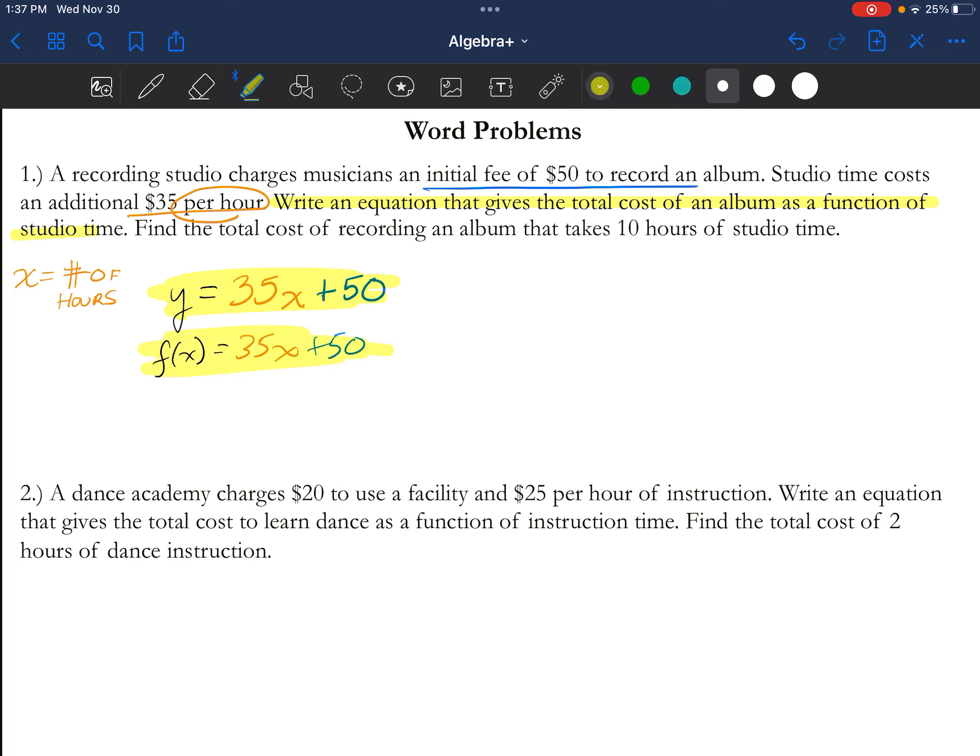Then it says now you're going to find the total cost if it takes 10 hours. So we're going to go ahead and substitute this. We get y equals 35, well I'm going to multiply that by 10 because it's saying that I'm going to be using 10 hours, plus my 50. I find out that this is going to be 350 plus 50. So if I want to rent this studio for 10 hours, it's going to cost me $400.